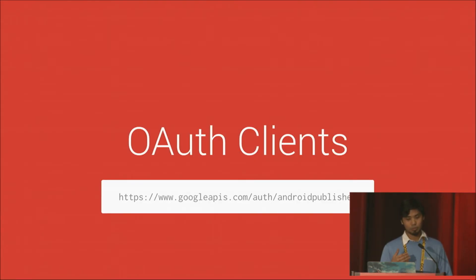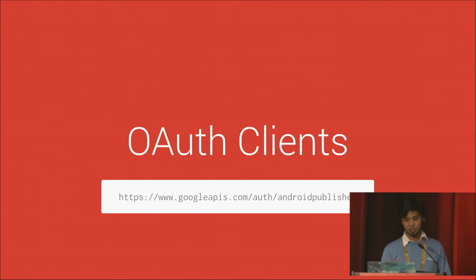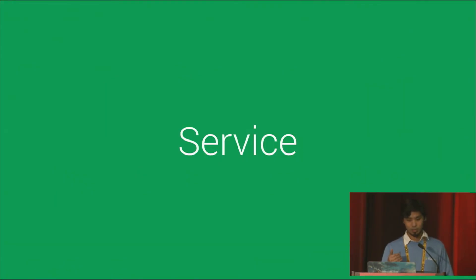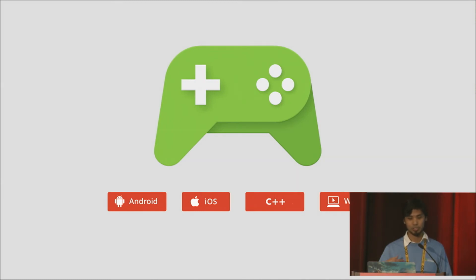We also have two main ways to authenticate from the client. The first is an OAuth client with the appropriate OAuth scope — one common mistake is to leave this scope out, so do include that. The second is to use a service account, which is basically another account that you can grant your rights to. This is very useful because you can set up a build server and then use the service account to run your publishing processes.